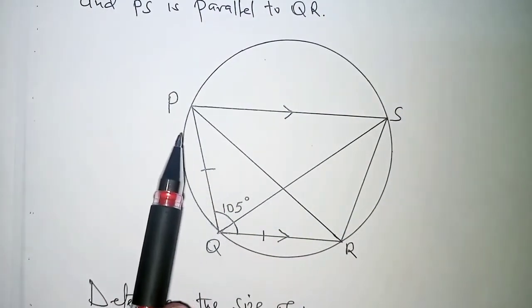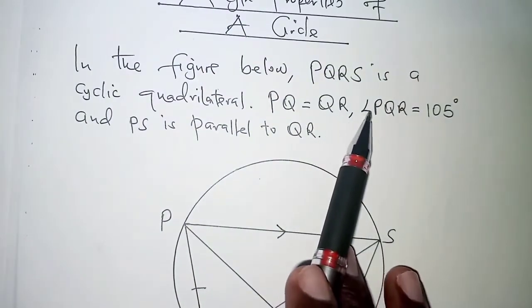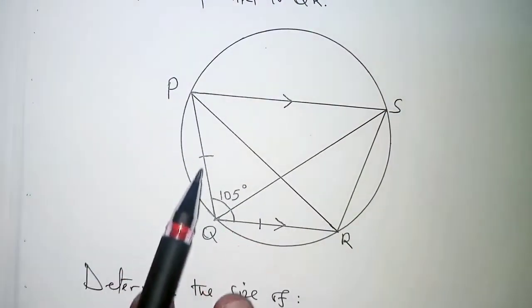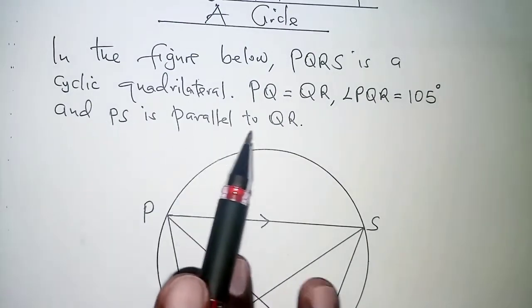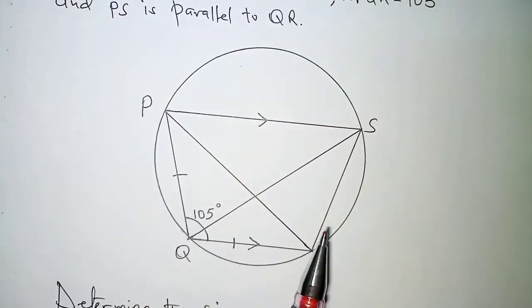PQ is equal to QR and angle PQR is 105. We have it right here angle PQR 105 and PS is parallel to QR. We have PS and QR parallel.